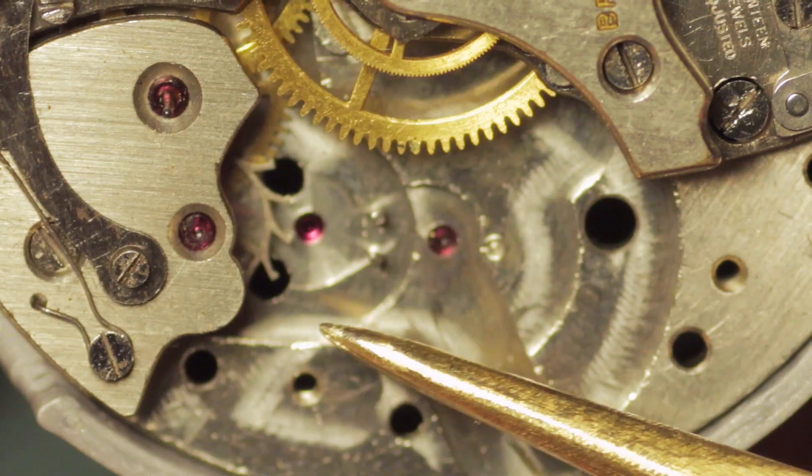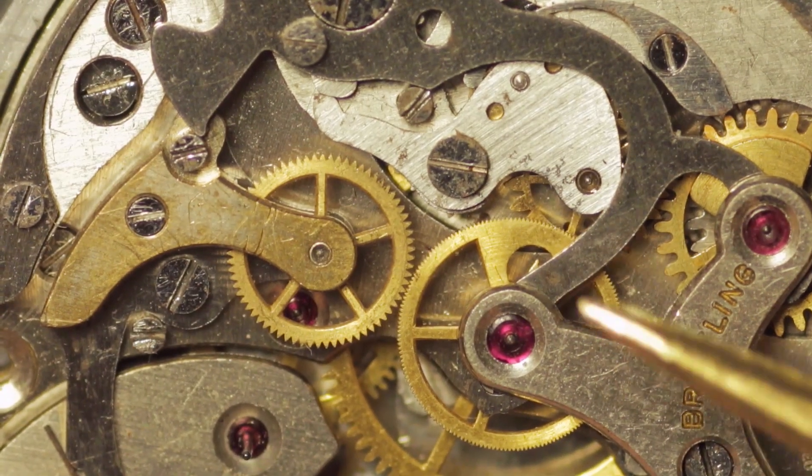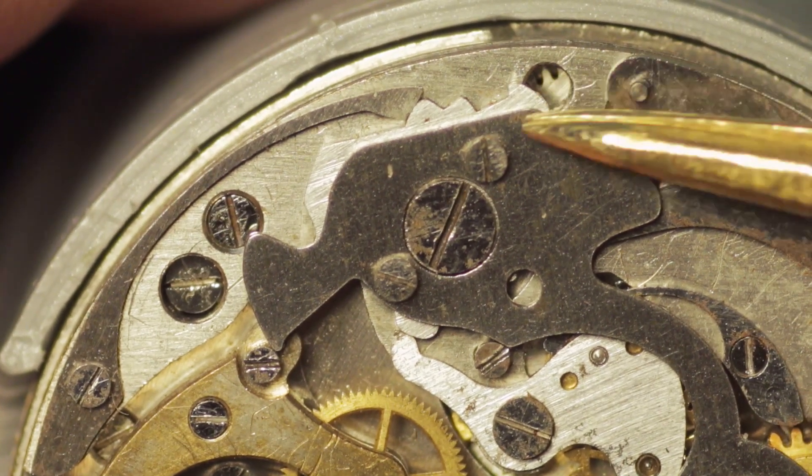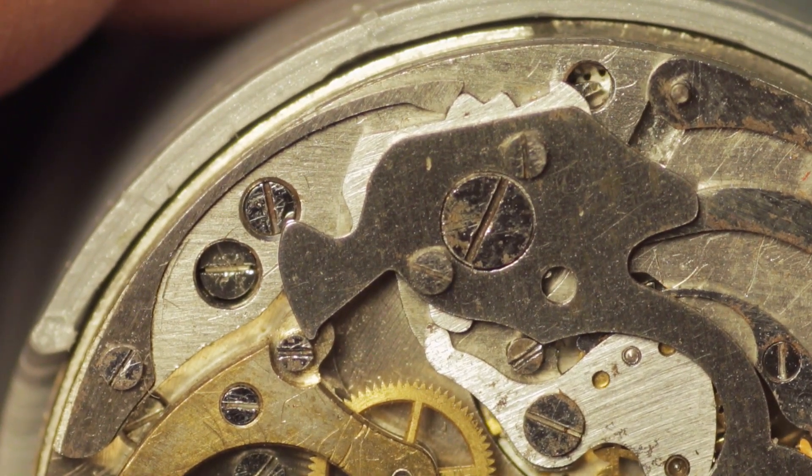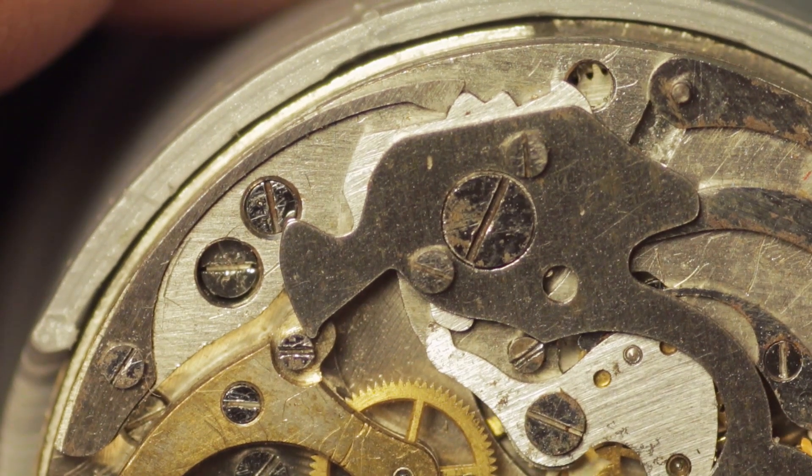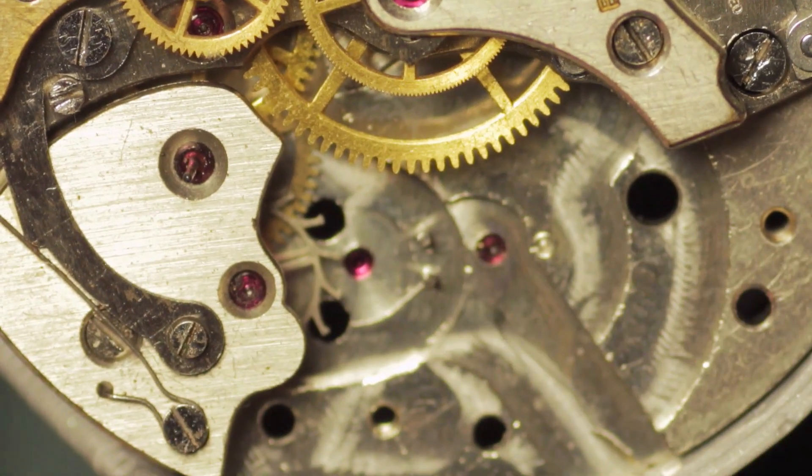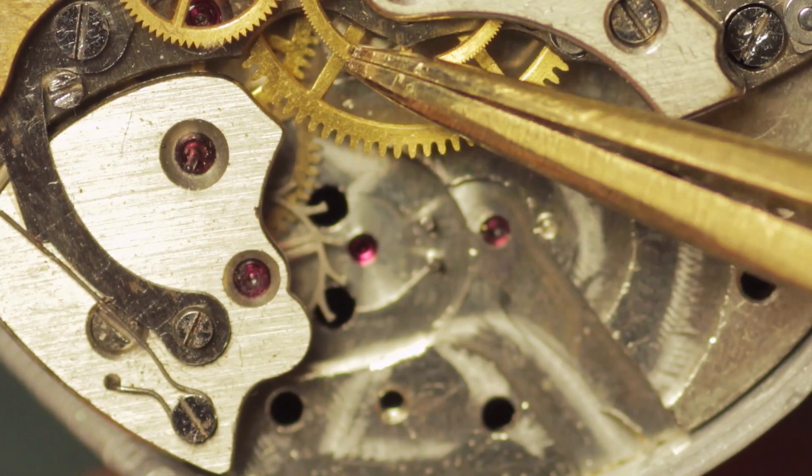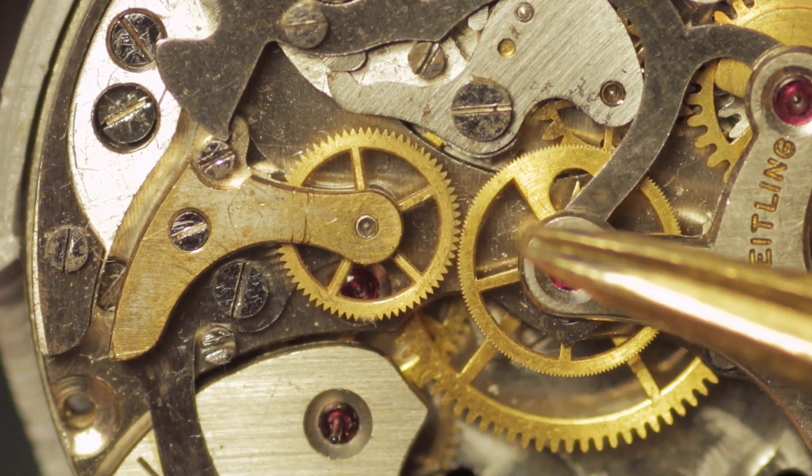Down here you see I've removed the balance cock and the pallet fork. Whenever you're stripping a chronograph, before you begin to strip the chronograph components, it's best to let down the power. Usually there's an access hole on this type of chronograph. In this case it's this one down here - it's actually very hard to see, but you can just see the click as I turn the crown there just come into view. You have to get a very thin item to hold that while you let the power down. So let down the power, remove the balance cock, and remove the pallet fork.